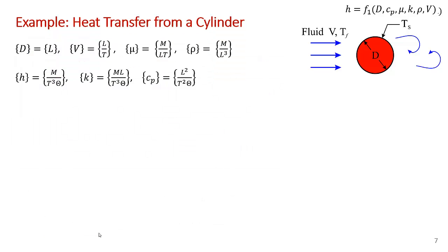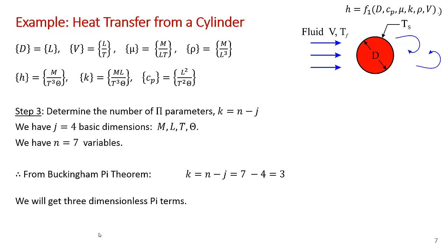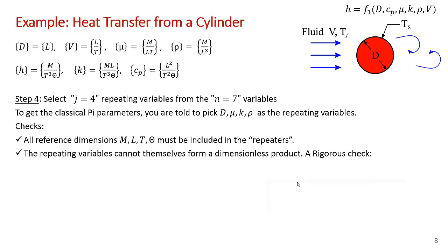Step three: determine the number of pi parameters. That's k equals n minus j. n is the number of variables — we have seven. j is the number of basic dimensions. Because we have a non-isothermal heat transfer problem, we have four basic dimensions: mass, length, time, and temperature. From Buckingham's pi theorem, k equals seven minus four — we're going to end up with three dimensionless pi parameters.